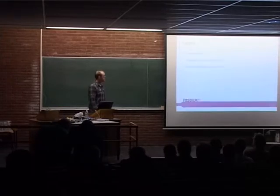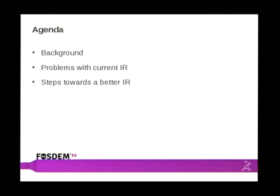I'm going to spend a bit of time going over the background of the current compiler architecture and how we ended up with this IR, talk about a bunch of the problems that we've discovered with the IR architecture over the last three years, and then talk about ways to evolve the existing IR into something better that doesn't have a bunch of those problems.